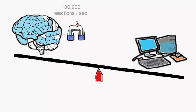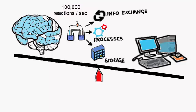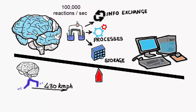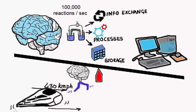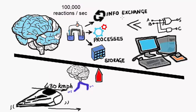With a hundred thousand electrochemical reactions happening every second, and where all the information exchange, processing, and storage happen due to these chemical reactions, we can say that the speed of the brain is a mere 430 kilometers per hour, same as the world's fastest running bullet train in Shanghai.